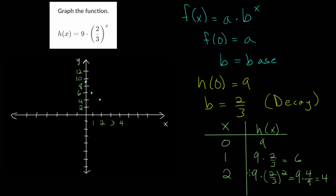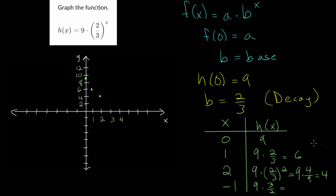We could also go the other way and plug in a negative x value. For x = -1, we get 9 · (2/3)^(-1). Raising to the -1 power flips the fraction, so that's 9 · (3/2) = 27/2. Two goes into 27 thirteen whole times with 1 left over, so that's 13.5. So at x = -1 the graph goes through roughly that point.